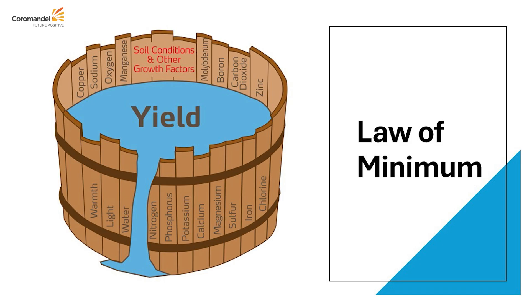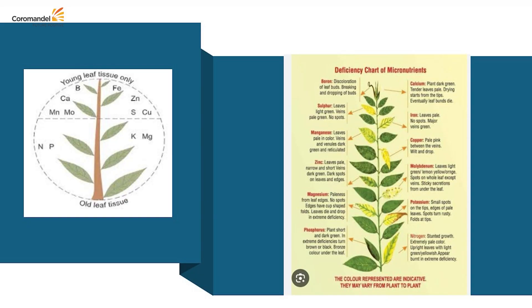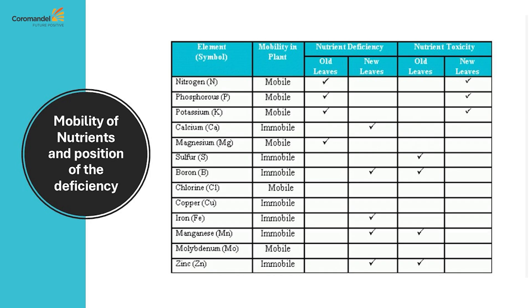Mobile nutrients like nitrogen, phosphorus, and potassium are highly mobile in the plant, so their deficiency appears in the lower part of the plant. Micronutrient deficiencies appear in the middle of the plant. Calcium and boron are immobile in the plant, so their deficiency appears at the top. Accordingly, we divide nutrient deficiencies based on lower leaf symptoms, middle leaf symptoms, and top leaf symptoms.